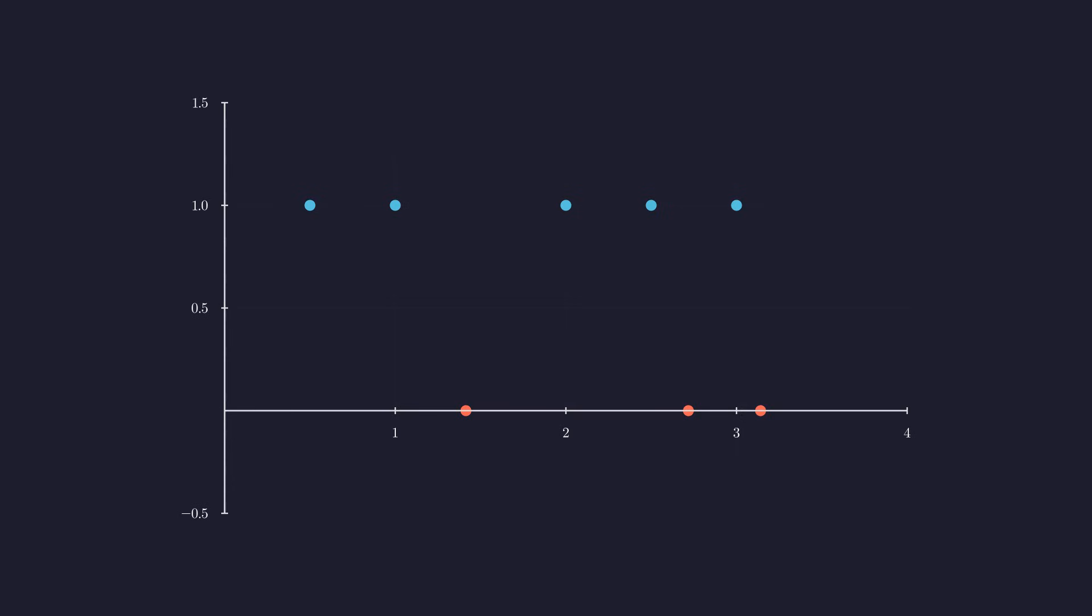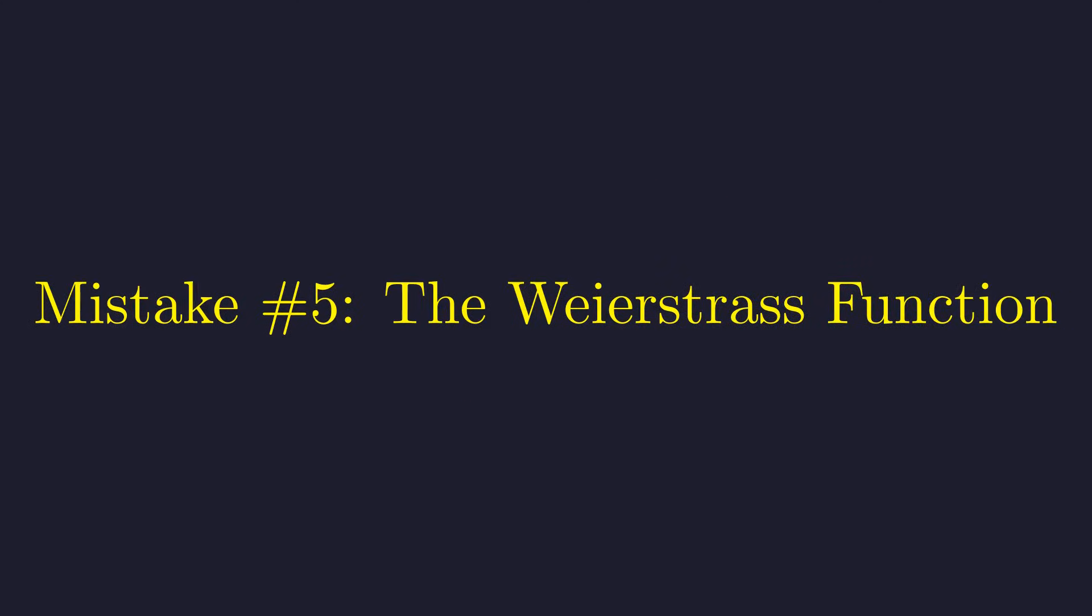The red dots are irrational inputs where the function is zero. The problem is that between any two numbers there are infinite rationals and irrationals. The function incessantly jumps between zero and one, making it continuous nowhere.